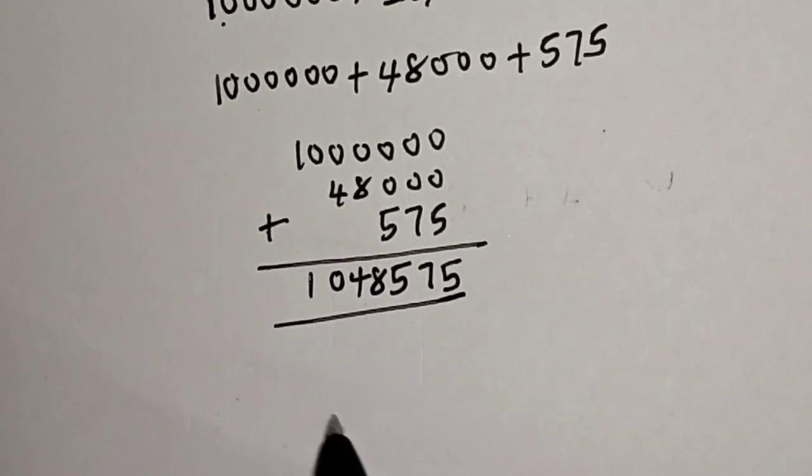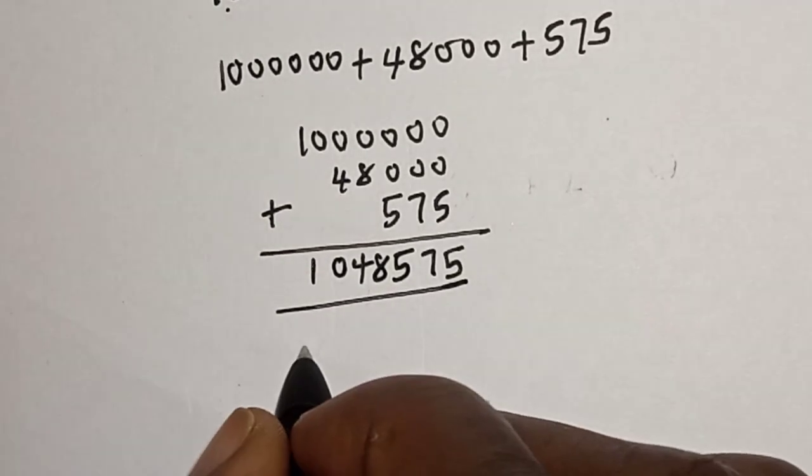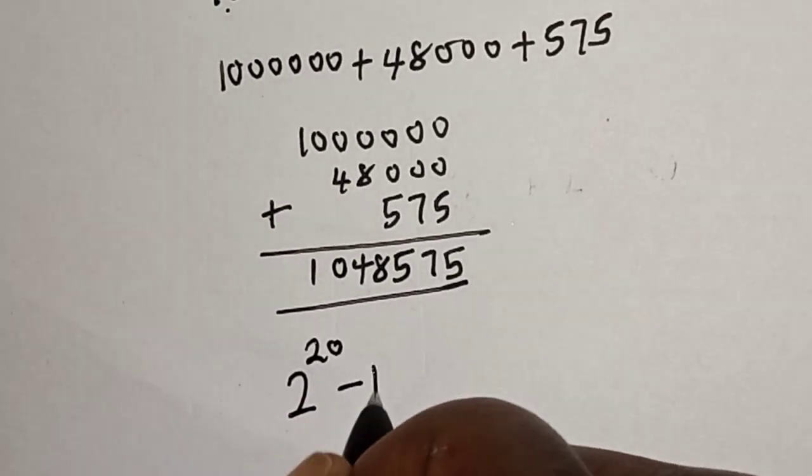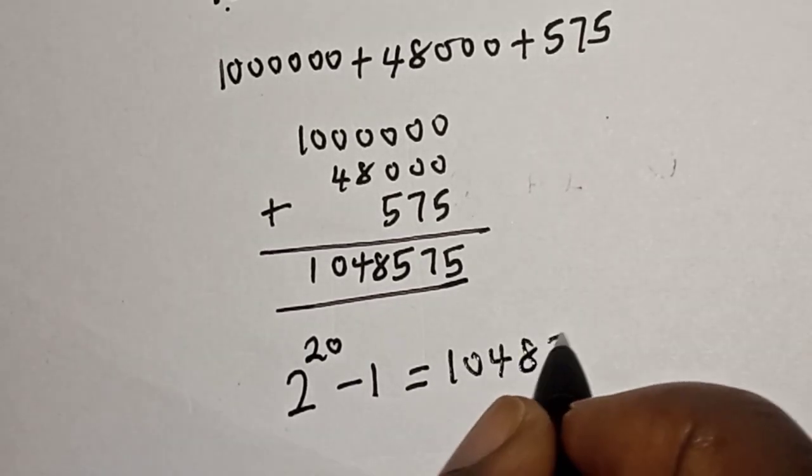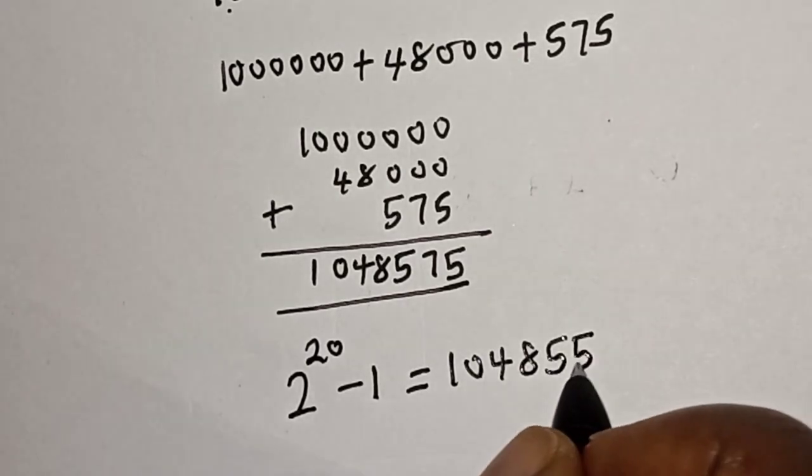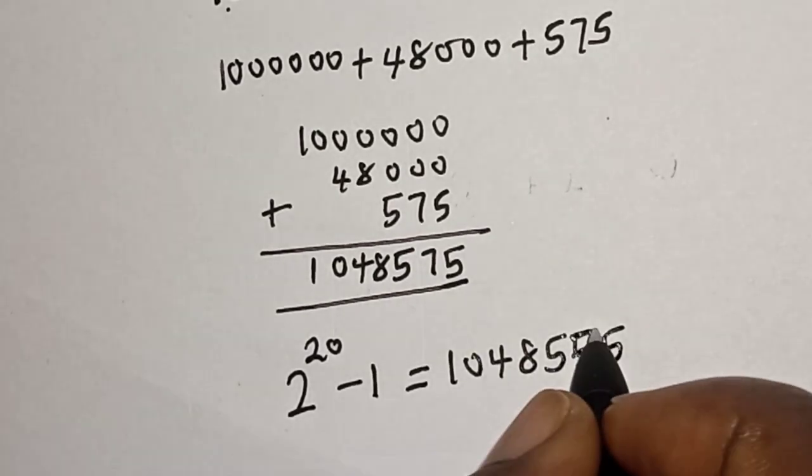Therefore, 2 raised to power 20 minus 1 is equal to 1048575.